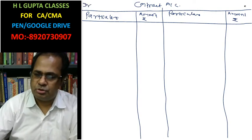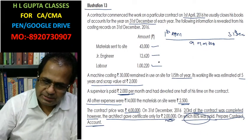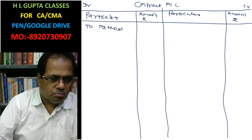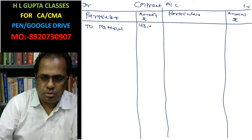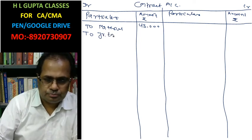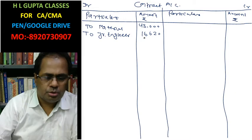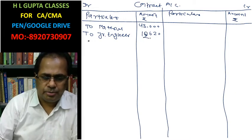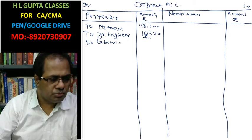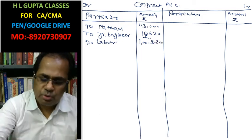On the debit side, we enter the expenses. Material: Rs. 43,000. Junior Engineer: Rs. 12,620. Labour: Rs. 1,220. Now we have to calculate depreciation.